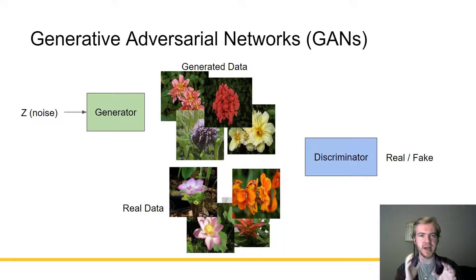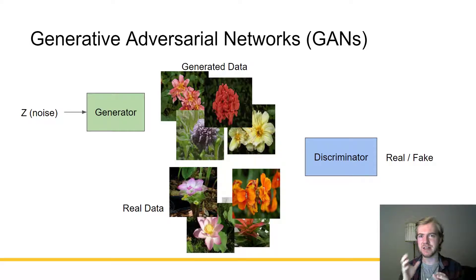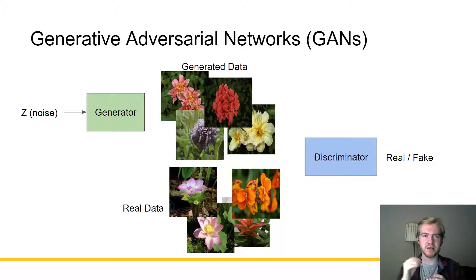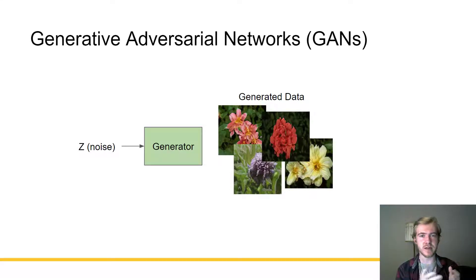These two networks train back and forth simultaneously until eventually they come to a Nash equilibrium where the discriminator can hardly tell that the generated images are generated. In the end, what you end up with is a generator which can take in noise and generate realistic-looking images.